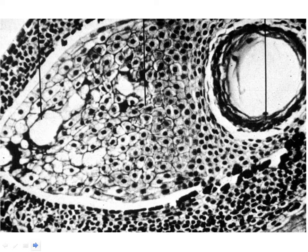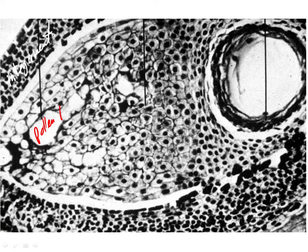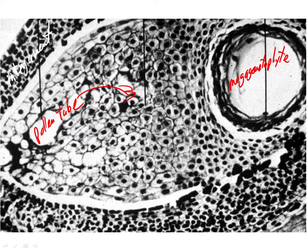At a later stage, outside is the integument. Here's a pollen tube, and here's a larger megagametophyte. There are some interesting developmental aspects about the megagametophyte that we won't go into in this class. The pollen tubes are growing down through the megasporangium — here's another part of the pollen tube. Continually growing down, the pollen tubes proceed.